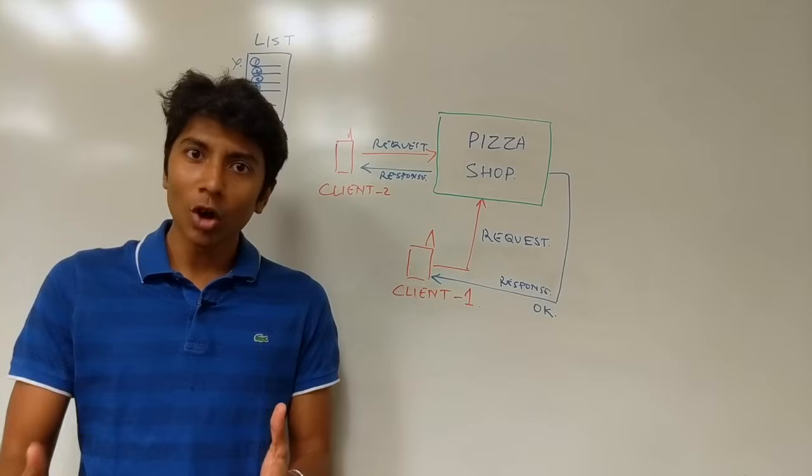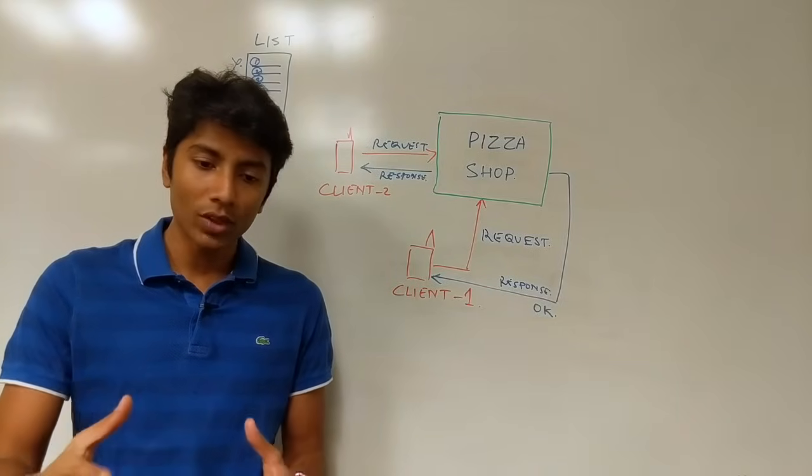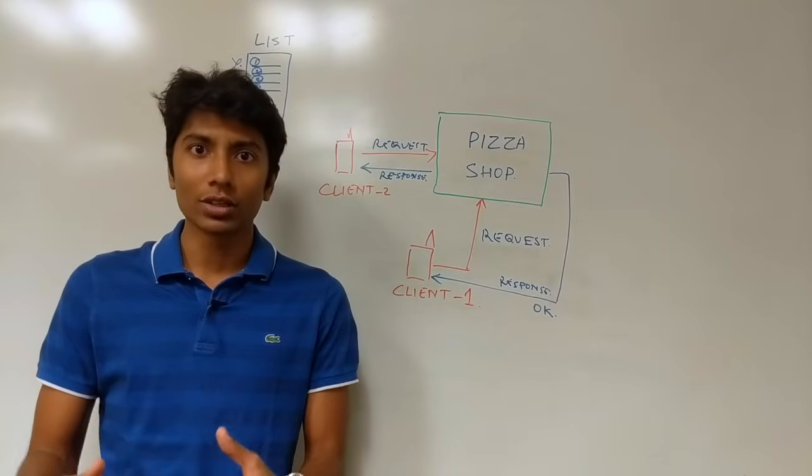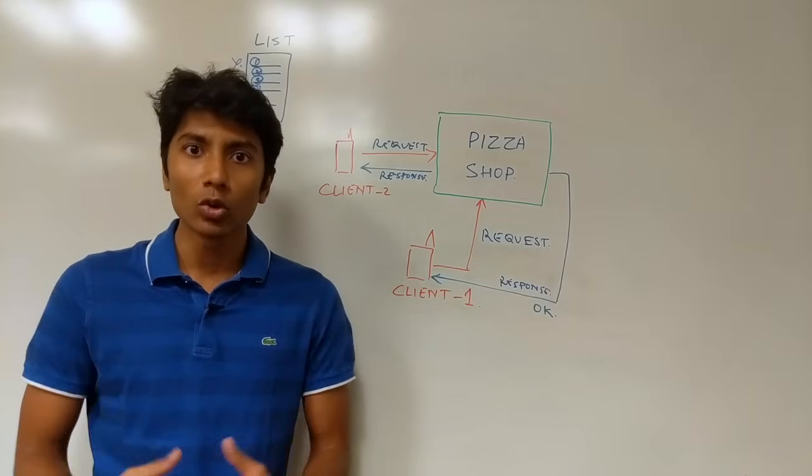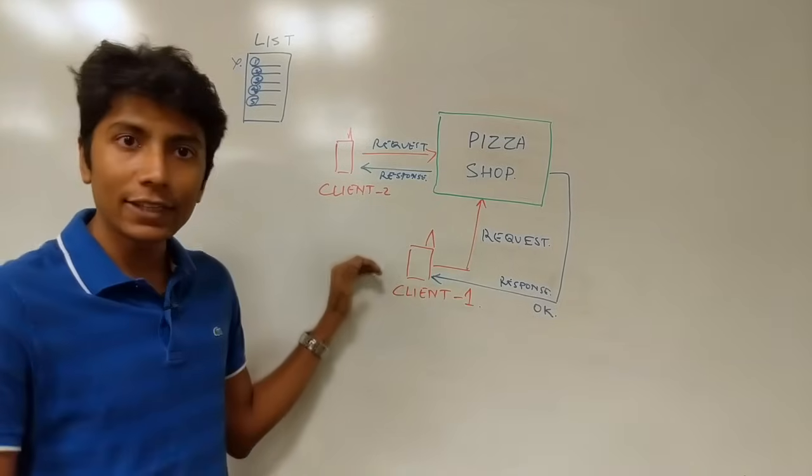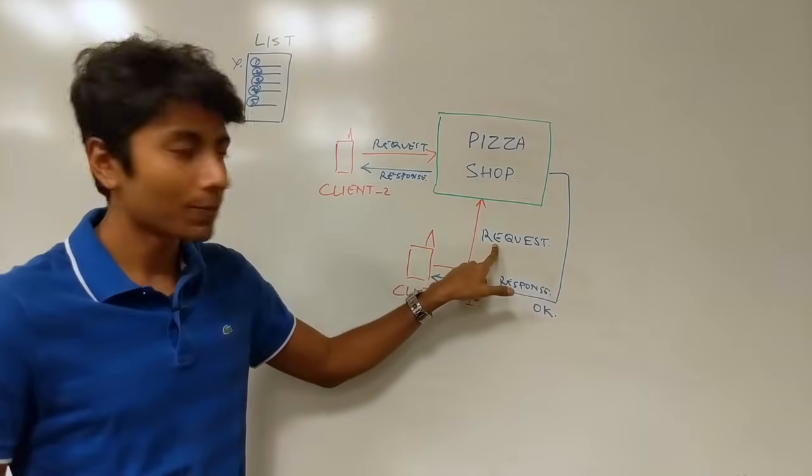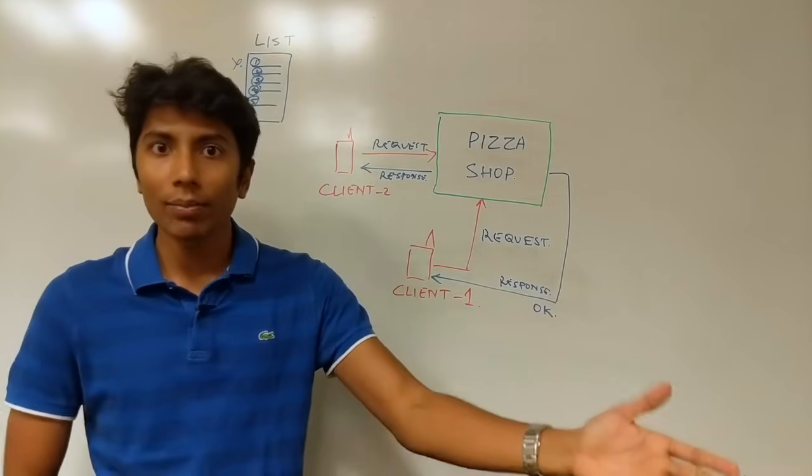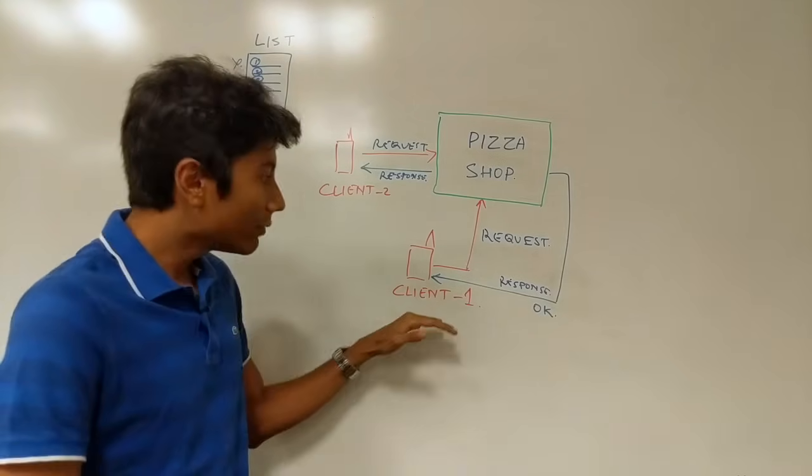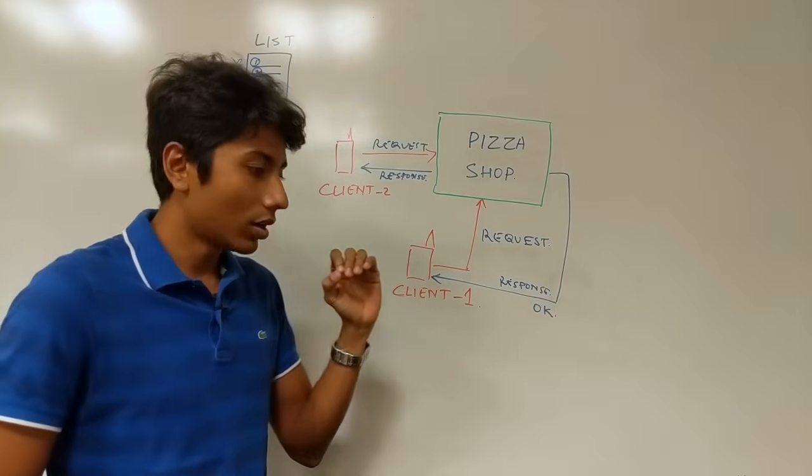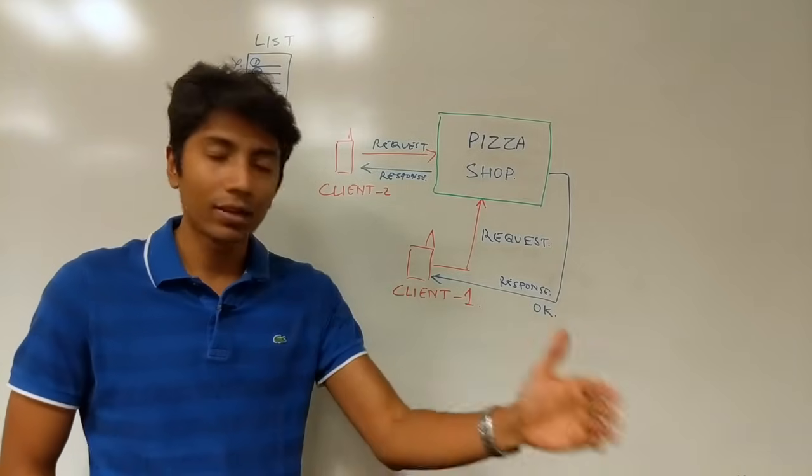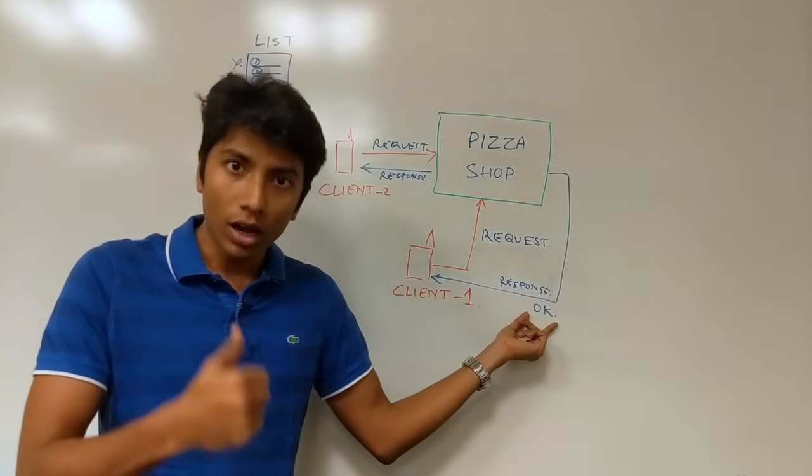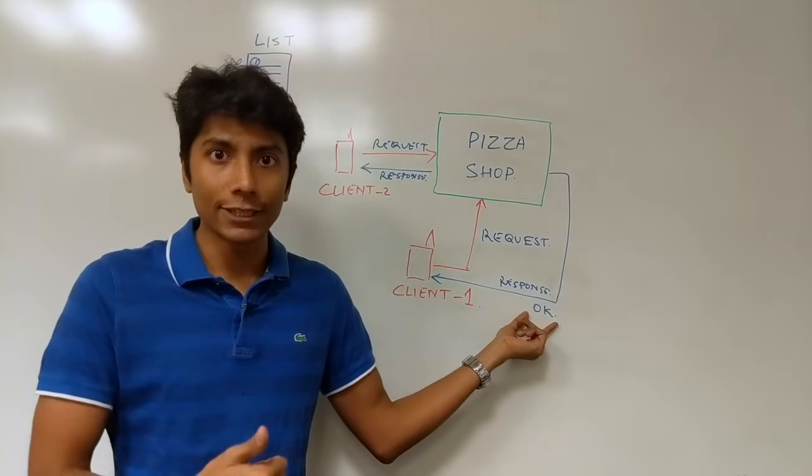So in a normal pizza shop you must be seeing that there's somebody taking orders and when the pizzas are being made they don't stop taking orders. Of course they keep taking orders from the new clients. So multiple clients request for pizzas and they get their responses immediately like please sit down or can you come back after some time. So you leave the client from expecting an immediate response by giving them a response which is not the pizza but a confirmation that yes the order has been placed.